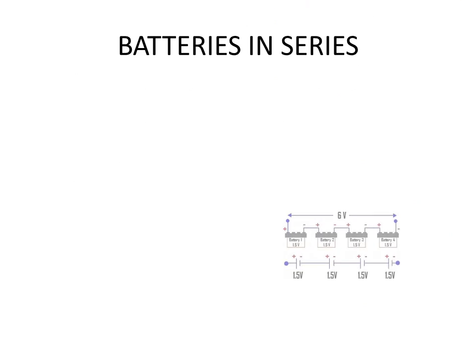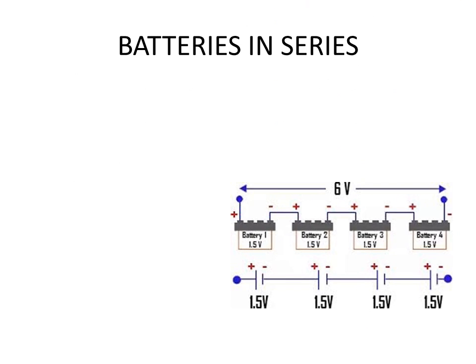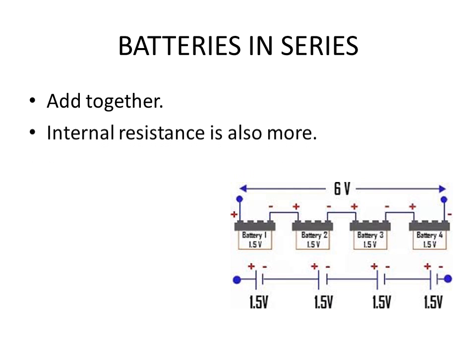Let us have a look at batteries in series. They also add together their values. Each of them also has their own specific internal resistances which also add together. Therefore R internal total equals R internal 1 plus R internal 2 plus R N which indicates the number of batteries under consideration. Therefore the total voltage or EMF of these batteries will be 6V.